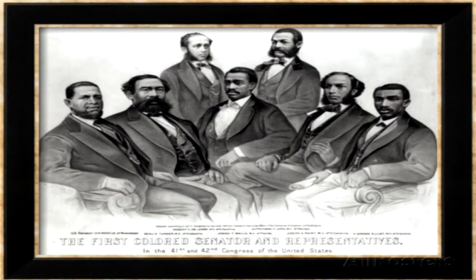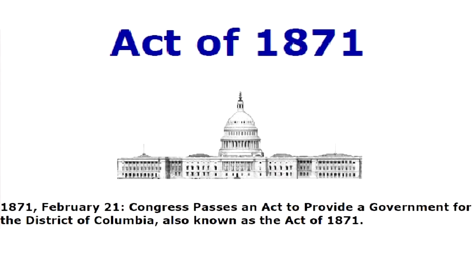Only then can we answer whether we are indeed a free people or not. The date is February 21st, 1871, and the 41st Congress is in session. I refer you to the Acts of the 41st Congress, Section 34, Session 3, Chapters 61 and 62. On this date in the history of our nation, Congress passed an act titled, 'An Act to Provide a Government for the District of Columbia,' also known as the Act of 1871.